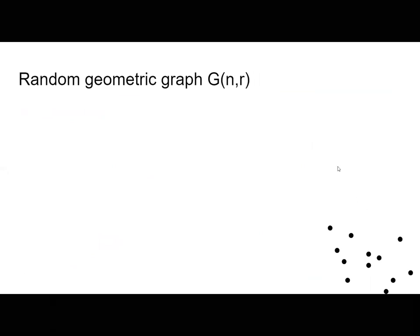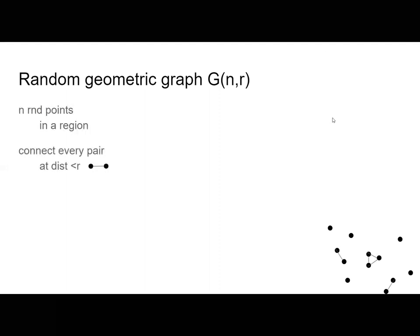The next definition is a random geometric graph. It's a random set of n points placed in a certain area. It's called geometric because you have a radius r and you connect all vertices that are at distance at most r. This appears everywhere in sensor networks — random points in a geometric domain where two points are connected whenever they are close to each other.